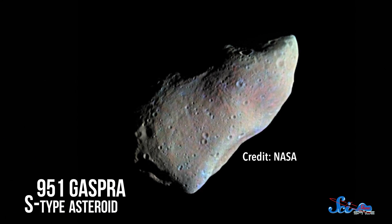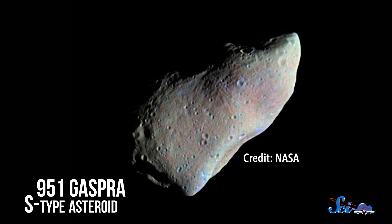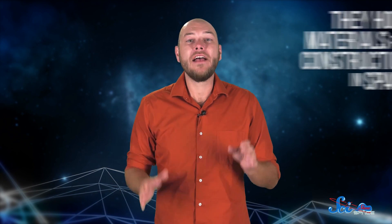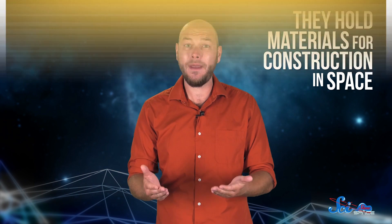There are also S-type asteroids, which are made of rocky minerals and some metals, and M-type, which have a bunch of metals. Since they're both denser than C-type asteroids, they'd be more difficult to mine. But more important than precious metals, they hold materials we need to build machinery or tools in space.